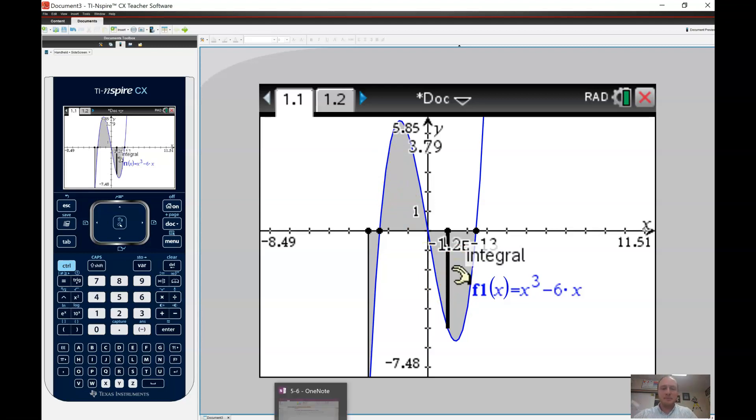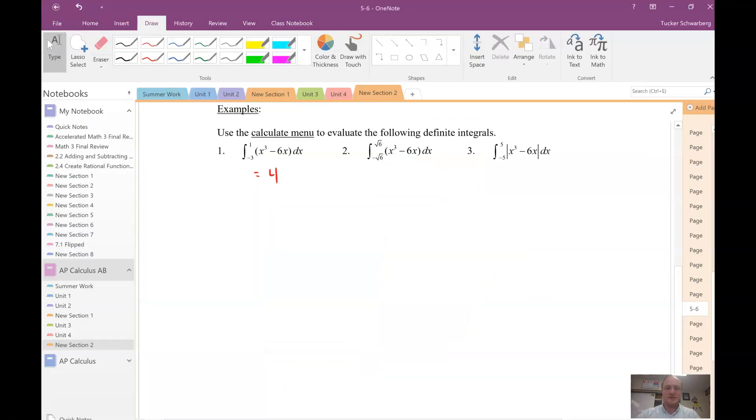We have some reflection going on across the origin. So this one's positive, this area, this area is negative, so they cancel each other out. Okay, so of course, our answer is 0, right? Because one's positive, one's negative, and they're exact same. So we get 0.